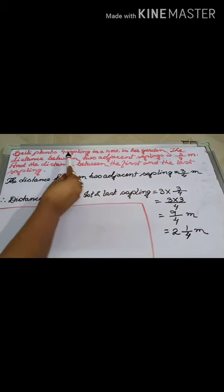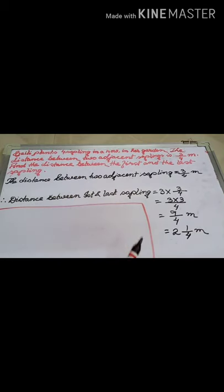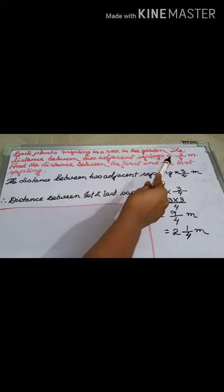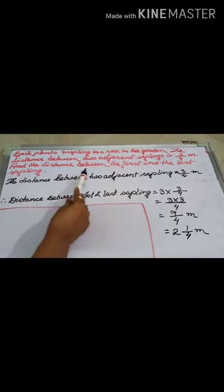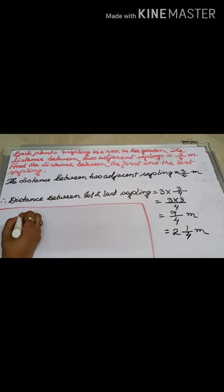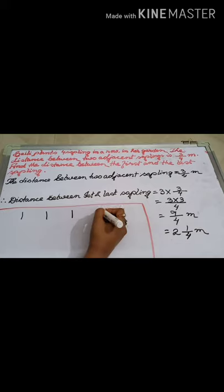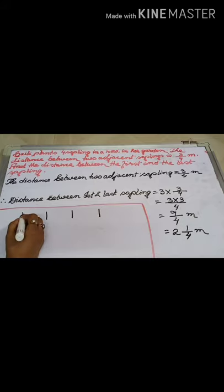Next question: Sally plants 4 saplings in a row in her garden. The distance between 2 adjacent saplings is 3/4 metre. Find the distance between the first and the last sapling. So Sally has planted 4 saplings one after another in one row.